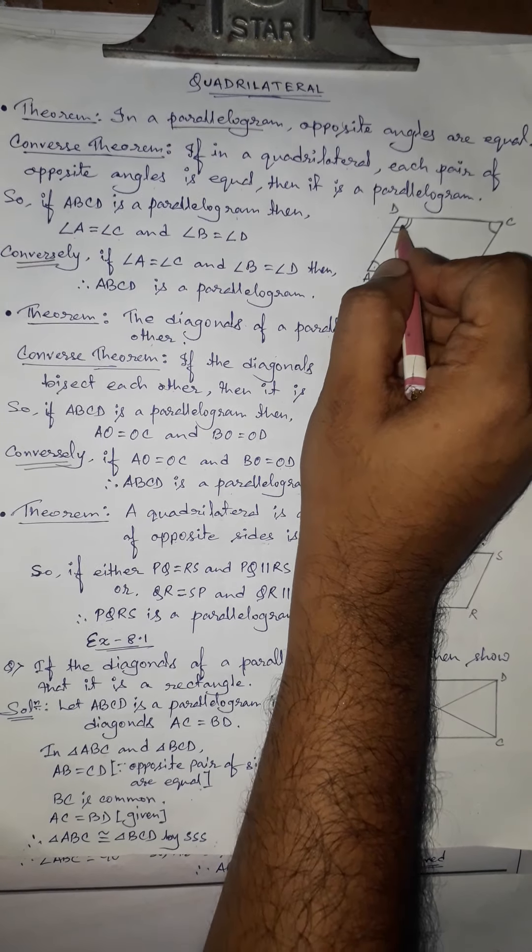The next theorem states that the diagonals of a parallelogram bisect each other. So if diagonals are drawn on a parallelogram, they will always bisect each other. In the converse theorem, if the diagonals of a quadrilateral bisect each other, then the quadrilateral must be a parallelogram.